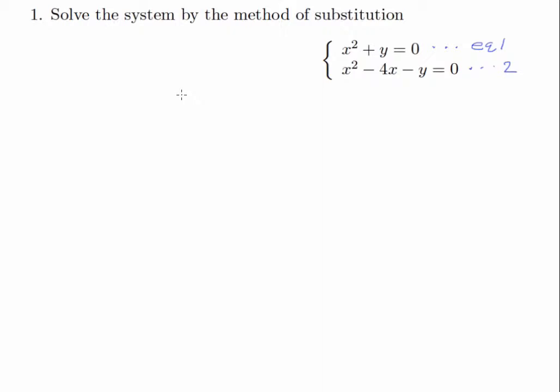The method of substitution involves us rearranging one of these equations to make a variable the subject. So in this case, I will make y the subject from equation 1. Let y equal negative x squared. So now I have this new equation, I will call equation 3.